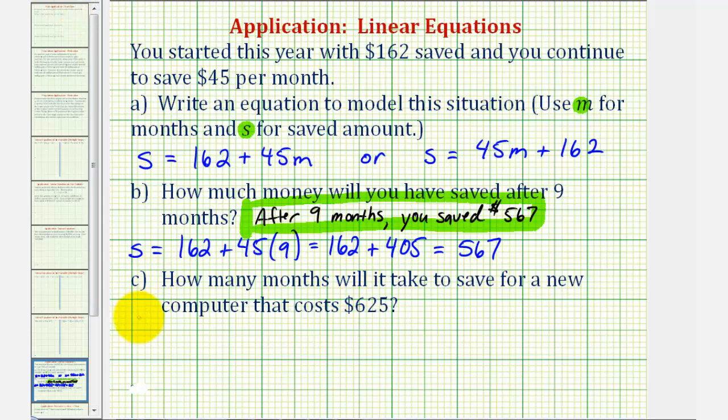So we want to solve the equation 625 equals 162 plus 45M. For the first step, we want to isolate the variable term, so we'll subtract 162 on both sides of the equation.